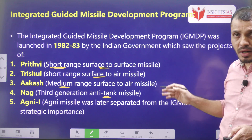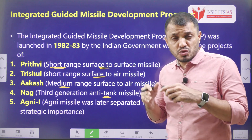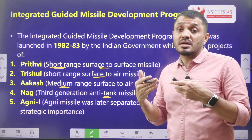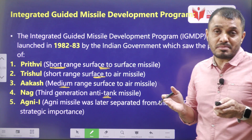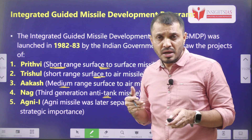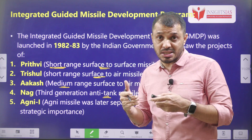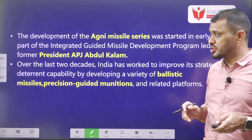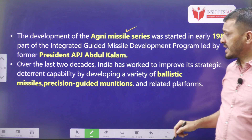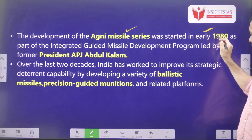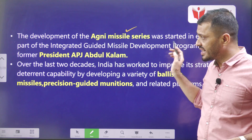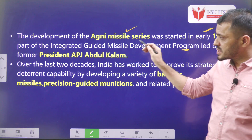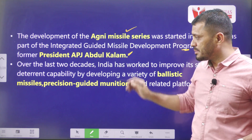These missiles were developed under the Integrated Guided Missile Development Program. The brain behind this program included many scientists — women scientists like Tessie Thomas, our former honorable president APJ Abdul Kalam, Nambi Narayan, and so many scientists who contributed to the development of these missiles and missile technology. The development of the Agni series started in the 1980s as a part of the Integrated Guided Missile Development Program, and it was led by former president APJ Abdul Kalam.